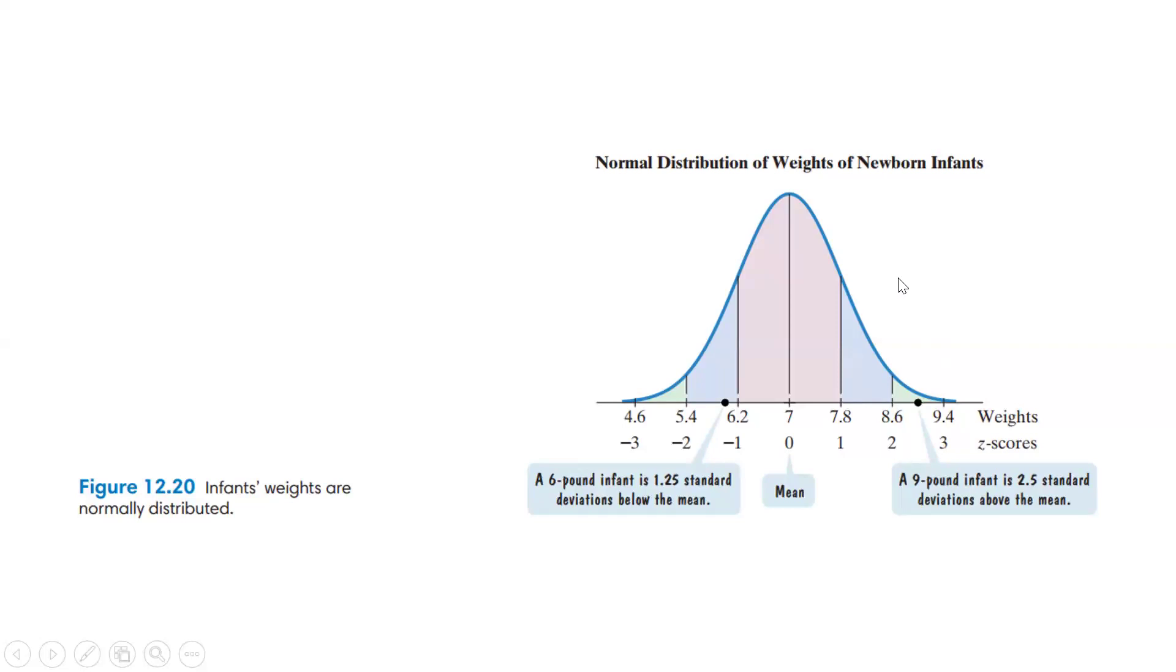This is how it looks if we look at a normal distribution. This is of newborn infants. The mean looks to be 7 pounds. One standard deviation below, or a z-score of negative 1, is 6.2. Two below is 5.4, three below is 4.6.